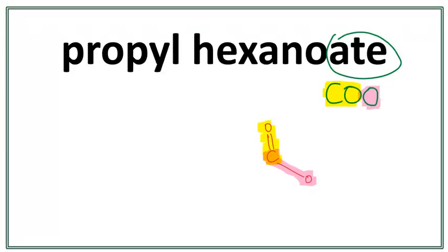So we have the functional group drawn in. Let's work on the parent chain. This hex right here tells us that there are six carbons in the longest carbon chain. And the parent chain always attaches with the carbon in the COO group.